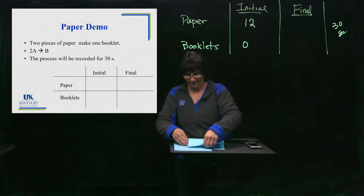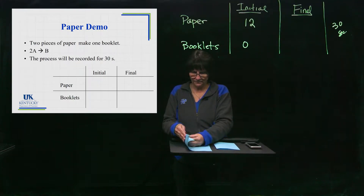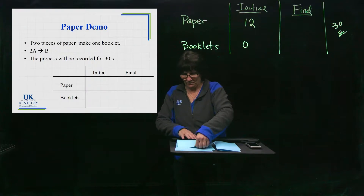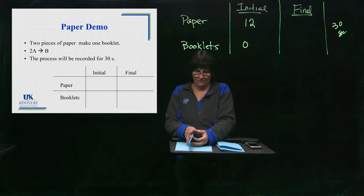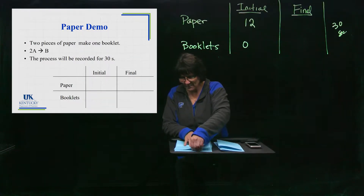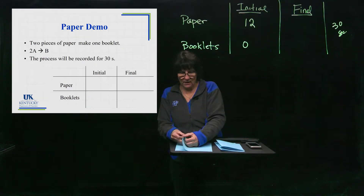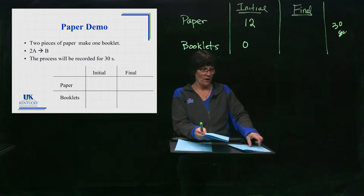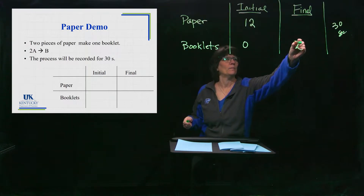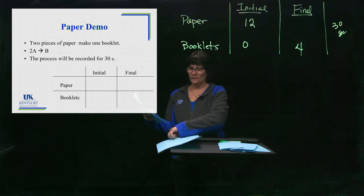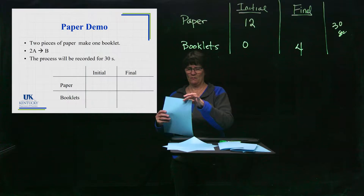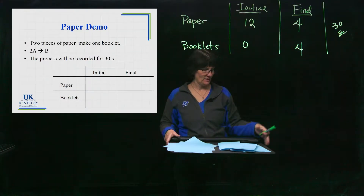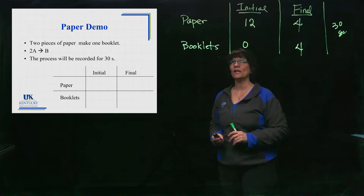I take two pieces of paper and fold them in half — booklet one. Take two pieces of paper, fold them in half — you get the picture. I won't claim my rate of speed is constant throughout, but there's my timer. I made one, two, three, four booklets. The booklets count is four, and I have four pieces of paper left. So I started with 12 and dropped to four; I started with no booklets and created four.